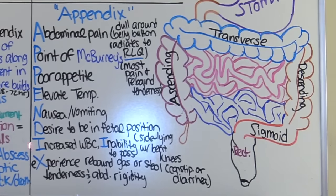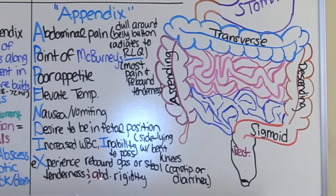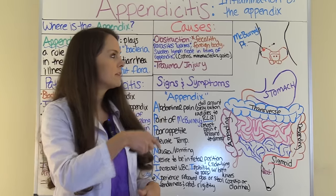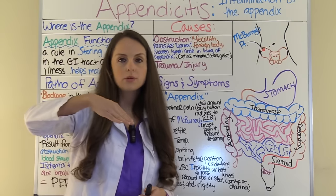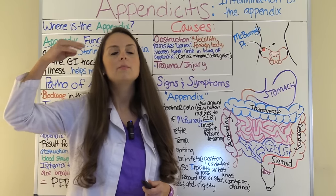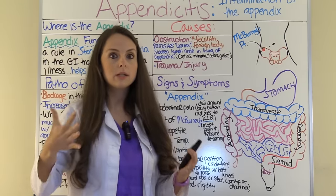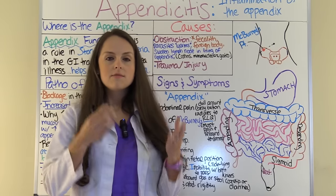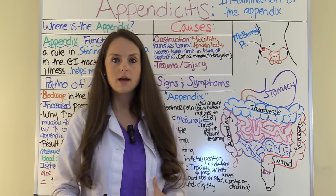I is for increased white blood cells — with all the inflammation, we expect that. The next I is for inability to pass gas or stool. A lot of patients are constipated, though some can have diarrhea. X is for experience of rebound tenderness or abdominal rigidity. Rebound tenderness is when you place pressure in the right lower quadrant at McBurney's point — it hurts pressing down, but when you let go, the pain is much more intense. Abdominal rigidity is involuntary flexion of the abdominal muscles when palpating — the abdomen becomes rigid.